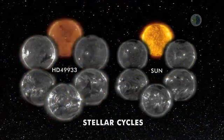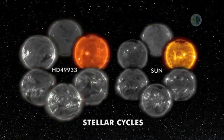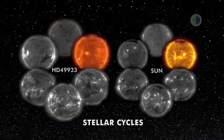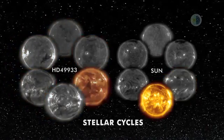CORO monitored a star known as HD 49933 for more than 180 days, revealing a magnetic cycle much faster than the Sun's. It's the shortest cycle ever observed in another star.